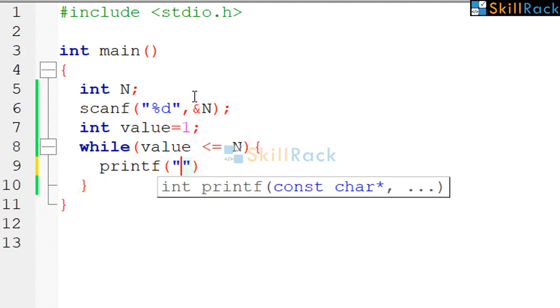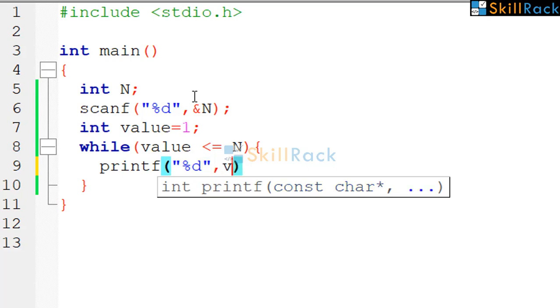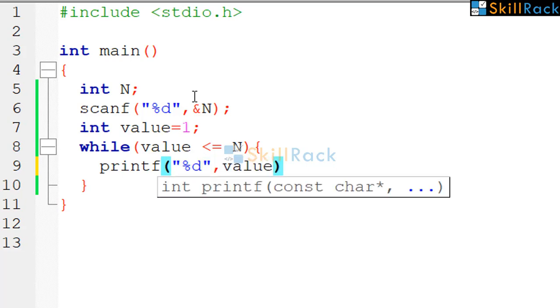So we print the value. Because the odd numbers must be separated by a space, we give a space here. Then value is increased by 2.